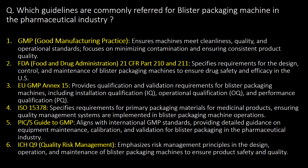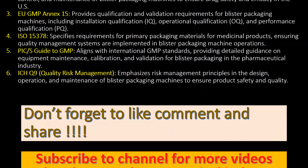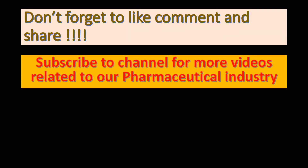Which guidelines are commonly referred to for blister packaging machines in the pharmaceutical industry? GMP (good manufacturing practices), FDA guidelines (21 CFR Part 210 and 211), EU GMP Annex 15, ISO 15378, PIC/S guide to GMP, and ICH Q9 are commonly referred guidelines. Don't forget to like, comment, and share. Subscribe to the channel for more videos related to the pharmaceutical industry. Thank you.